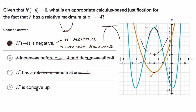The fourth choice says h prime prime is concave up. It does indeed look like the second derivative is concave up, but that by itself does not justify that the original function is concave up. A second derivative that is concave upward could still be positive the entire time — and if the second derivative is positive the entire time, the first derivative is increasing the entire time, meaning the original function is concave upwards the entire time. If you're concave upwards the entire time, you would not have a relative maximum at x equals negative four. So we rule that one out as well.